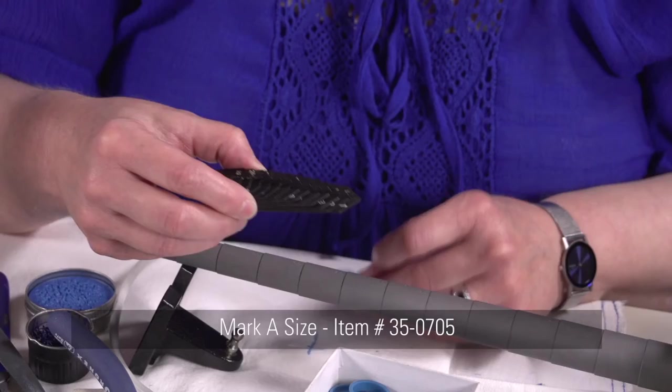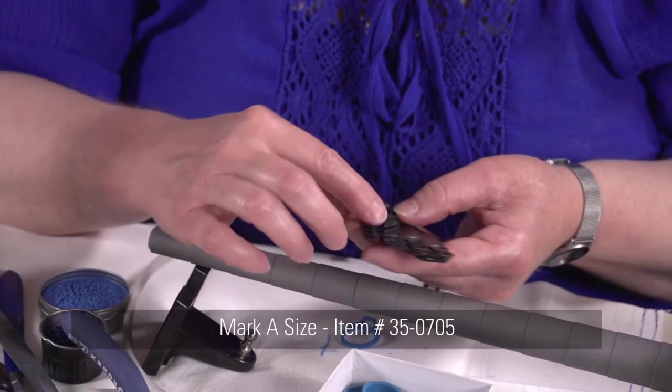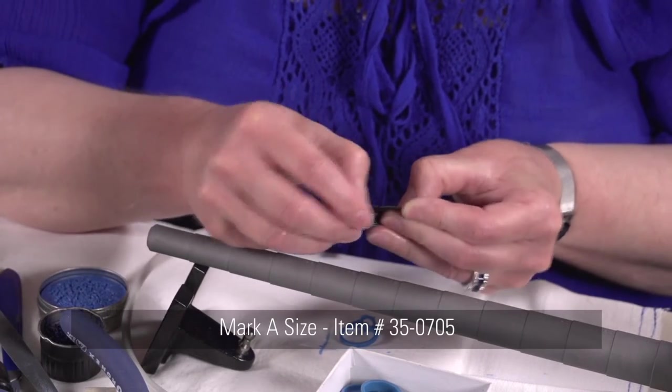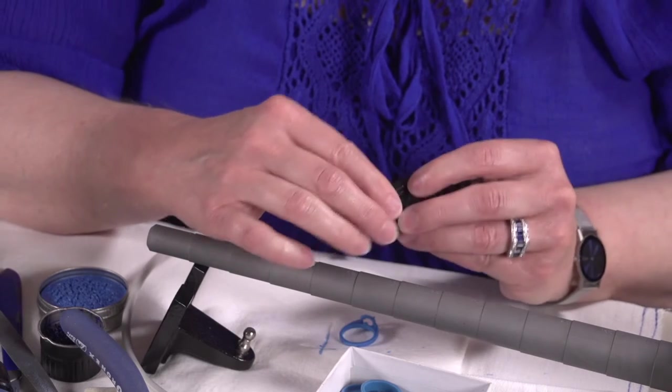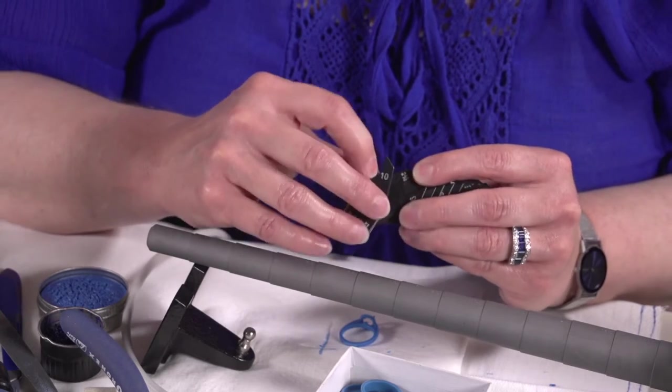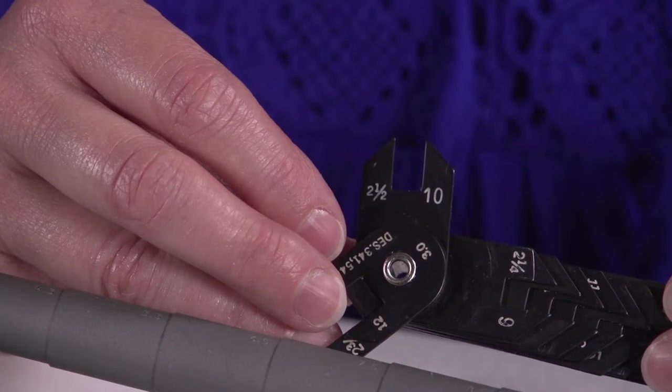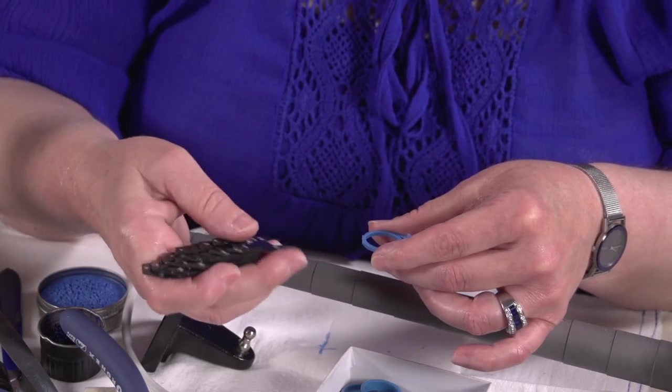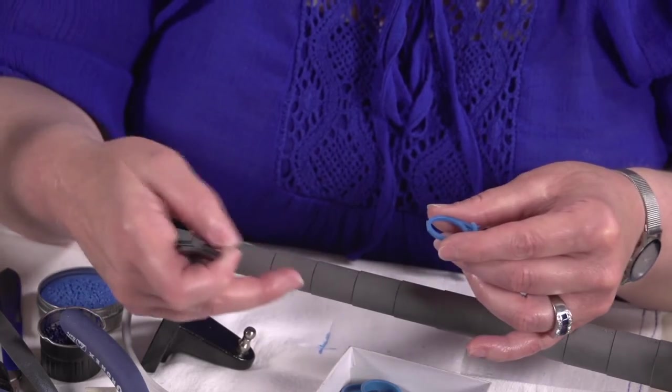We're going to go to our mark of size and find two and a half, which is the number 10 on the mark of size. You're going to want to go directly at the bottom of the shank and make sure that you're cutting the piece that you need.